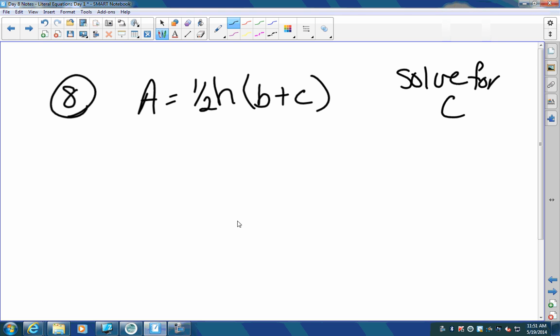So as you go to do the distributive property, you're going to take one half H times B. And you're going to take one half H times C. So I'm going to get A equals one half H times B plus one half H times C. Not pretty, I know.